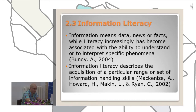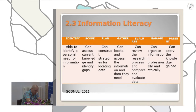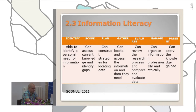SCONUL, in 2011, created a model which defines the use of core skills and competences, attitudes and behaviors — with seven pillars that students should have mastered before they arrive at university. You can see the full model in the report paper. The seven pillars are: identify, scope, plan, gather, evaluate, manage, and present.